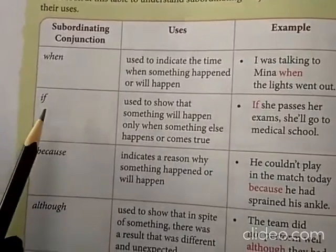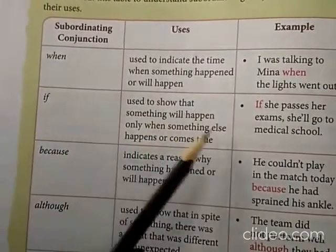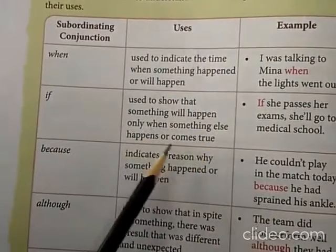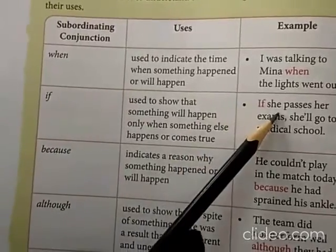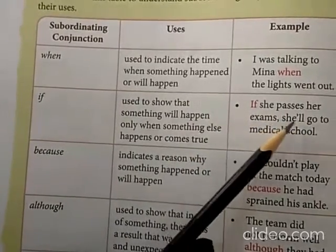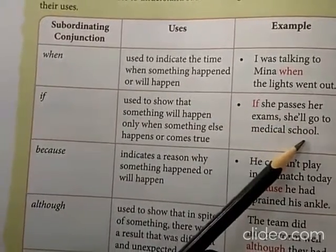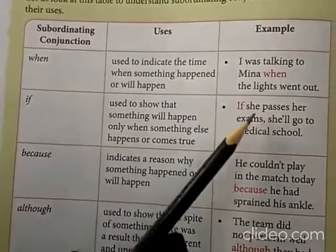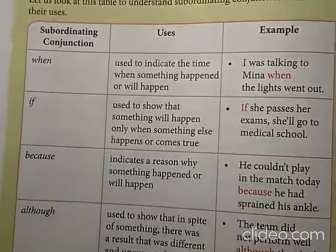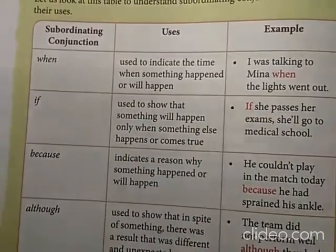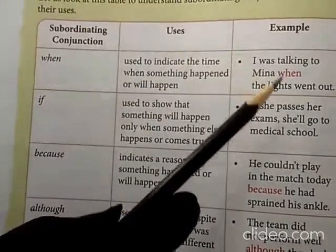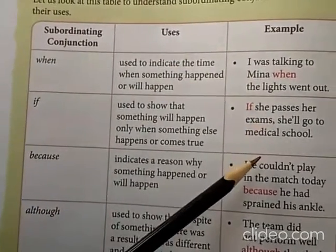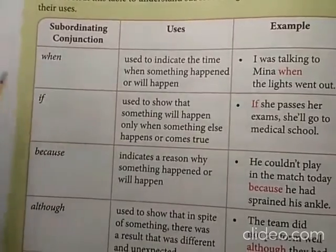'If' is used to show that something will happen only when something else happens or comes true. For example: If she passes her exams, she will go to a medical school. In order to express this conditional relationship, we use the word 'if'.